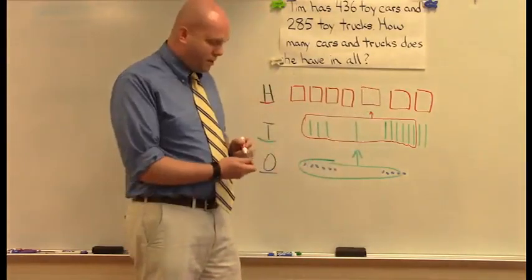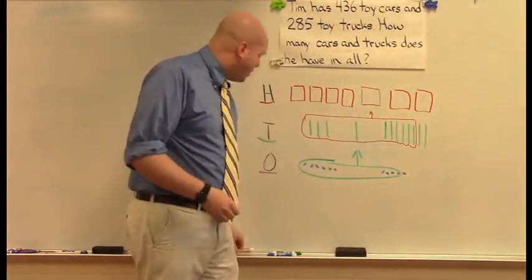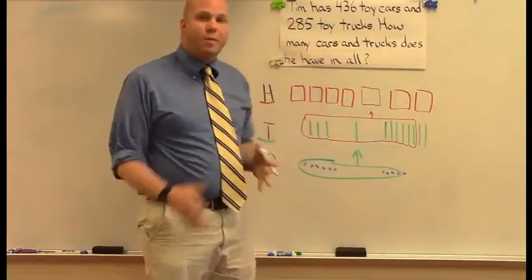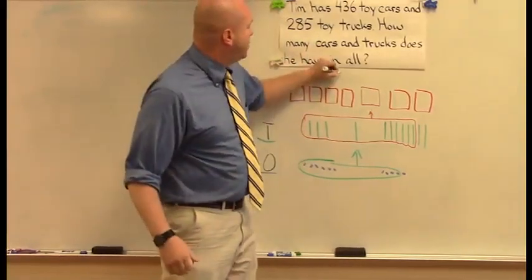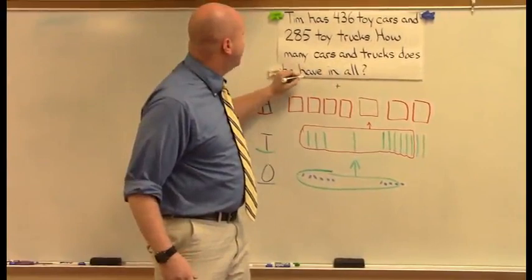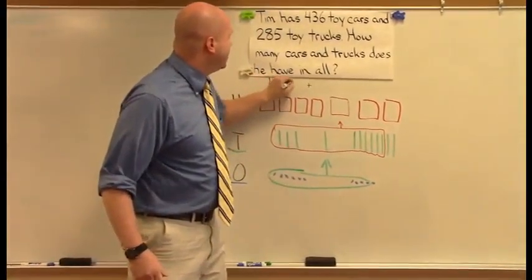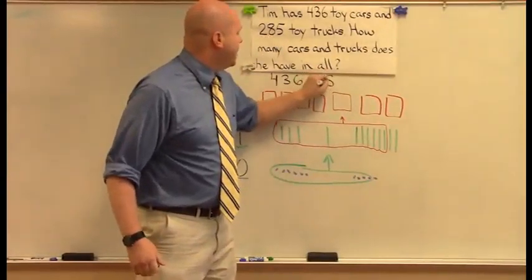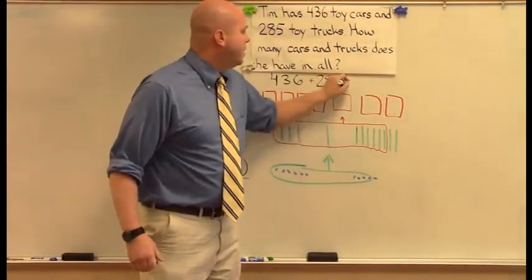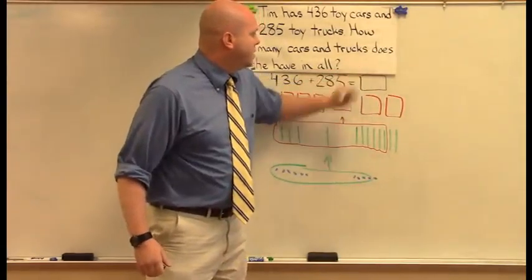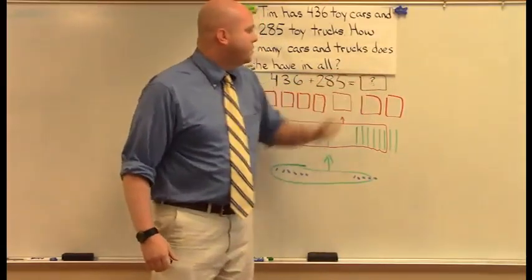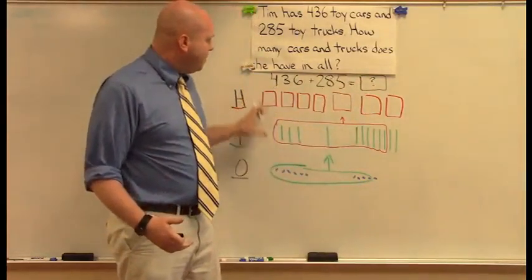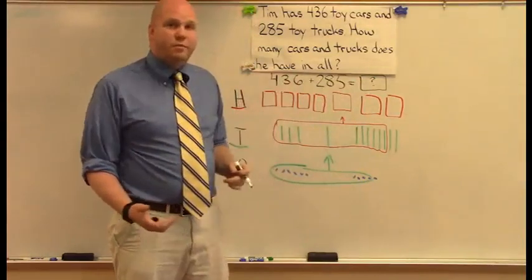And once we have everything mapped out nice and neat, we can kind of come back and look at our problem. We know that we need to find out how many we have in all. So we're going to be doing an addition problem. We started with four hundred thirty-six. We're adding our two hundred and eighty-five trucks. And what we want to know is the total. A lot of times we like to use mystery squares or using a symbol for our unknown. Now, we did the work, so we just have to fill it in.